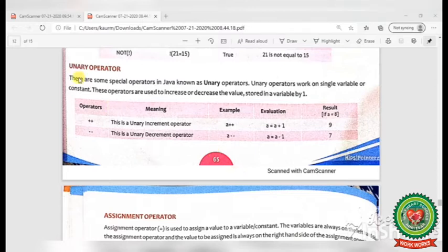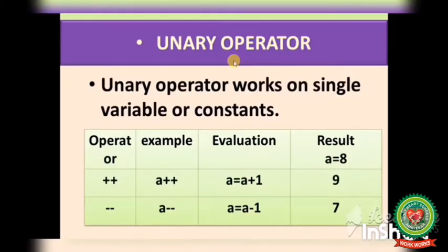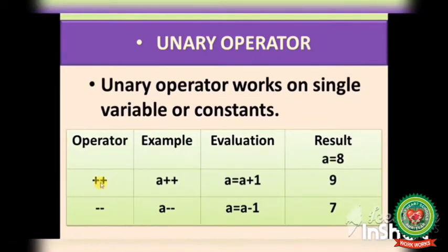The operators are unary operator and assignment operator. Unary operator works on a single variable or constant. These operators are used to increase or decrease the value of a variable by one. We have two operators: plus plus and minus minus. Plus plus means it will increase the value of the variable by one, and minus minus means it will decrease the value of the variable by one.